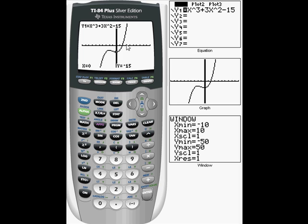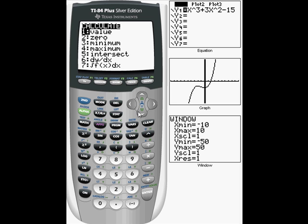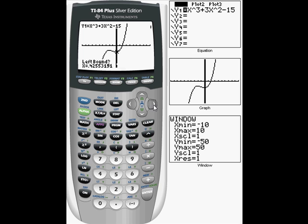The last thing I want to do is I want to find my x-intercept. So I do second, calc. I go down to 0, hit enter. Now I want my cursor to the left of the x-intercept and to the right of the x-intercept. And when I hit enter, that's my x-intercept, 1.7727975, 0.